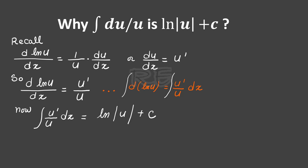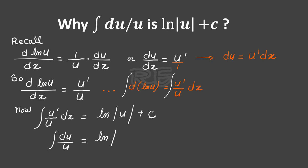The trick is to go back to du/dx equal to U prime, cross multiply, and you will see that du is equal to U prime dx. Therefore, U prime dx in the numerator can be replaced by du, and we get the integral of du over U is equal to ln of the absolute value of U plus C.